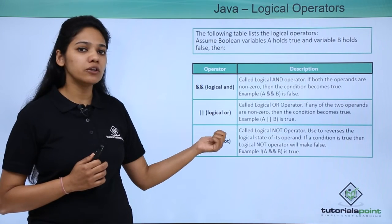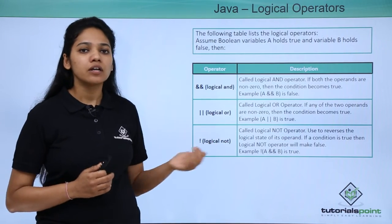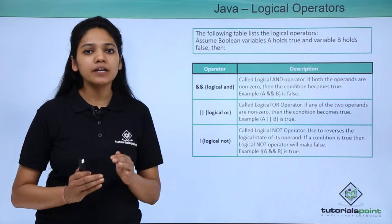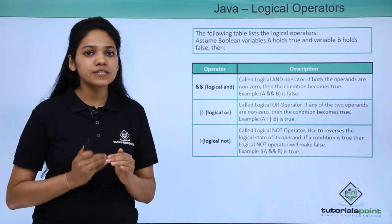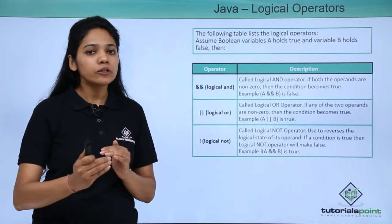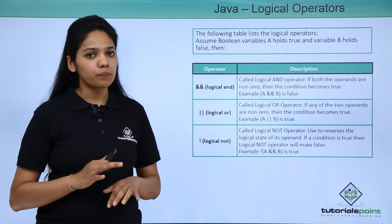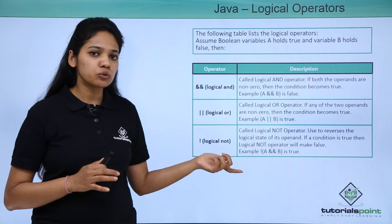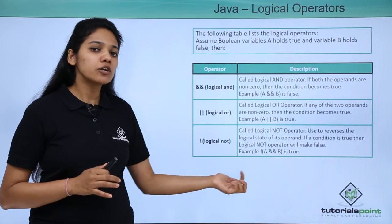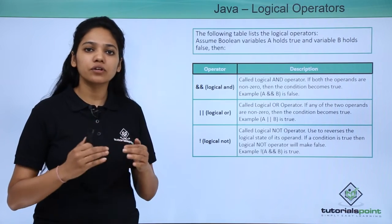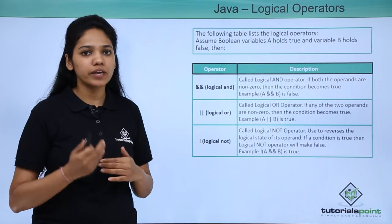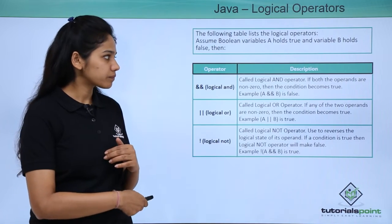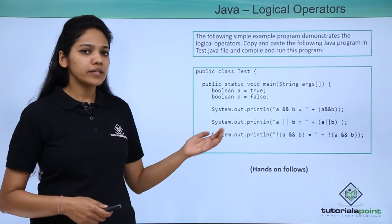The next one is the logical NOT operator. The logical NOT operator reverses the value of your operand. If A is equal to true, the logical NOT operator will convert or reverse the value of A to false.